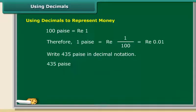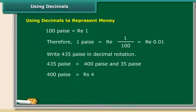435 paise may be split as 400 paise and 35 paise. 400 paise are equal to rupees 4.